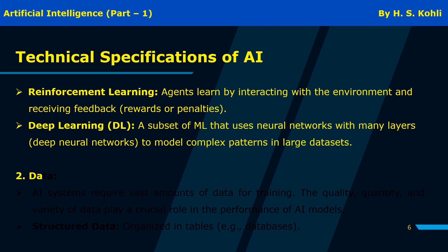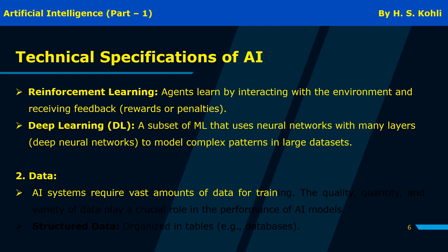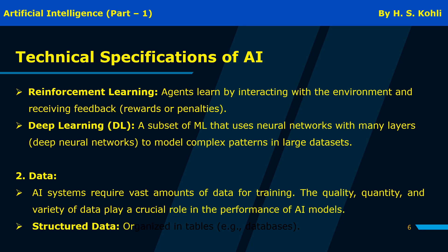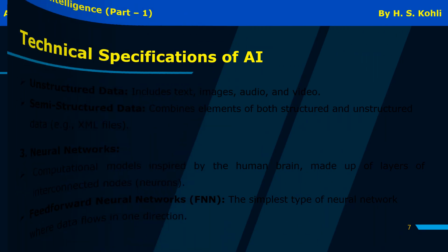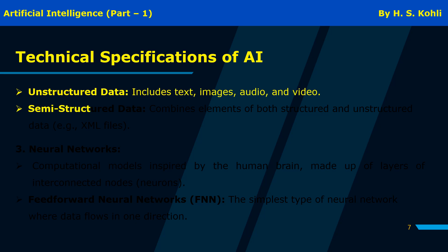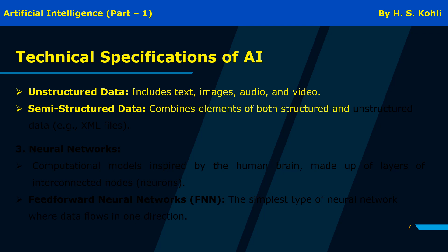AI systems require vast amounts of data for training. The quality, quantity, and variety of data play a crucial role in the performance of AI models. Data types include: structured data, organized in tables such as databases; unstructured data, which includes text, images, audio, and video; and semi-structured data, which combines elements of both, such as XML files.